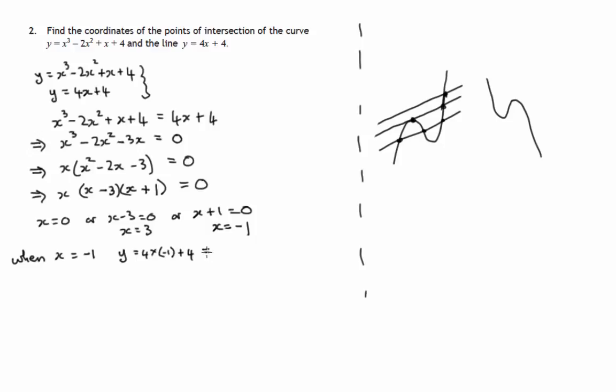But we'll use 4X plus 4 to get Y. So Y equals 4 lots of negative 1 plus 4. So 4 lots of negative 1 is negative 4. Negative 4 plus 4 is 0. So that gives us the point negative 1, 0.